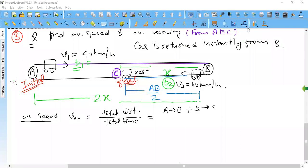From A to B and then from B to C. Is it clear? Yes. Divide by total time T1 plus T2.